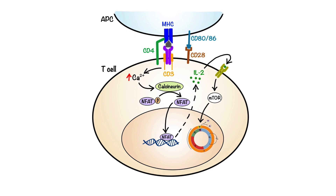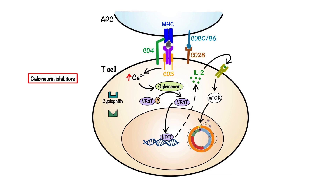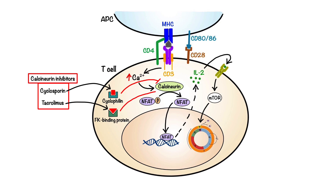Starting with calcineurin inhibitors: drugs in this group work by binding to intracellular proteins called immunophilins. Immunophilins consist of two protein families known as cyclophilins and FK binding proteins, and are the major receptors for the immunosuppressive drugs cyclosporine and tacrolimus, respectively. These complexes then bind to and inhibit calcineurin, thereby preventing nuclear factor of activated T cells from moving to the nucleus, which ultimately impairs transcription of the genes encoding interleukin-2 that is necessary for activation of T cells.